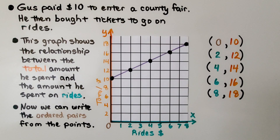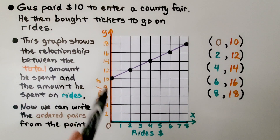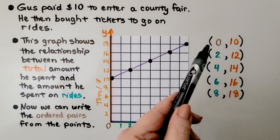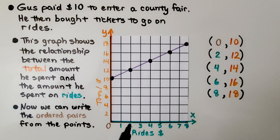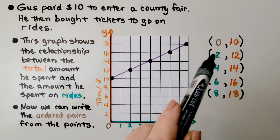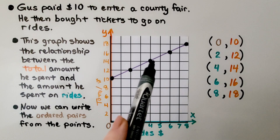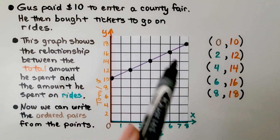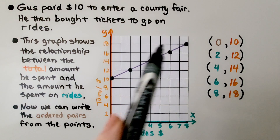Gus paid $10 to enter a county fair. He then bought tickets to go on rides. This graph shows the relationship between the total amount he spent and the amount he spent on rides. We can write ordered pairs from the points, always listing the x value first. So we have (0, 10), (2, 12), (4, 14), (6, 16), and (8, 18).